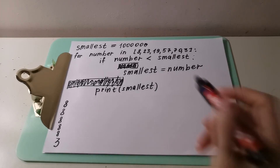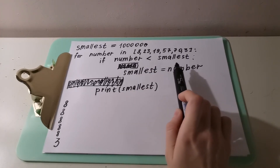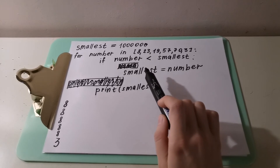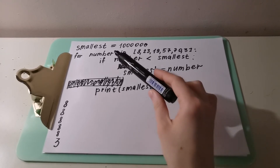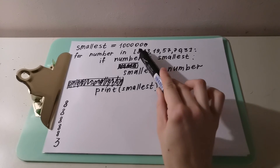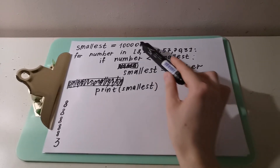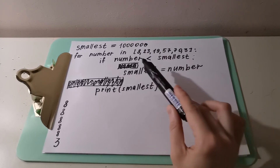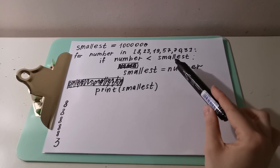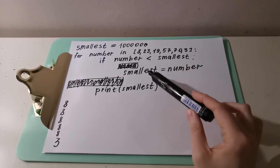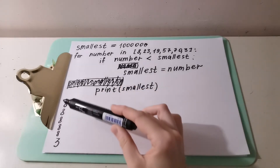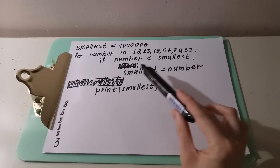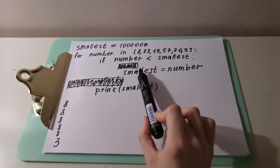By the way, I checked what happens if we put 'number' first and then 'smallest' in the assignment. It's important to write 'smallest' first and then 'number'. The logic is: if the number in the list is less than 'smallest', then 'smallest' takes the value of 'number' — not vice versa. If you put 'number' first and then 'smallest', your output goes crazy and all the numbers would become one million. So you can check and see why the logic is not correct in that case.